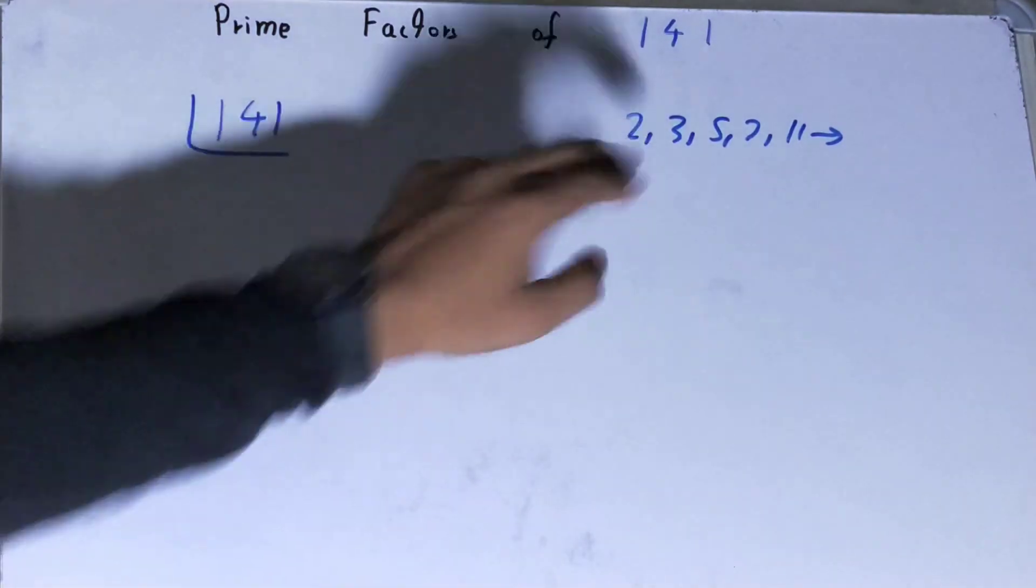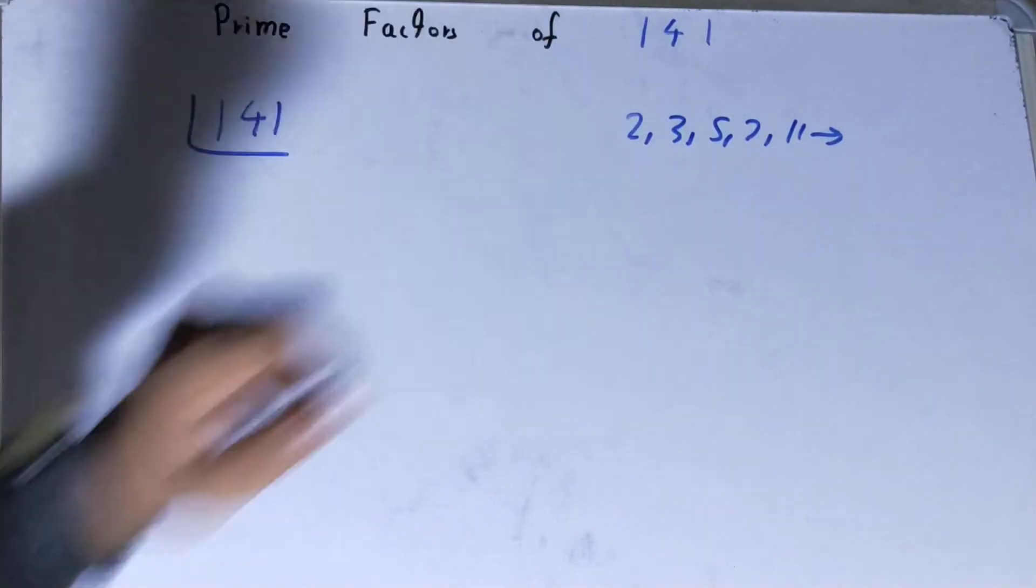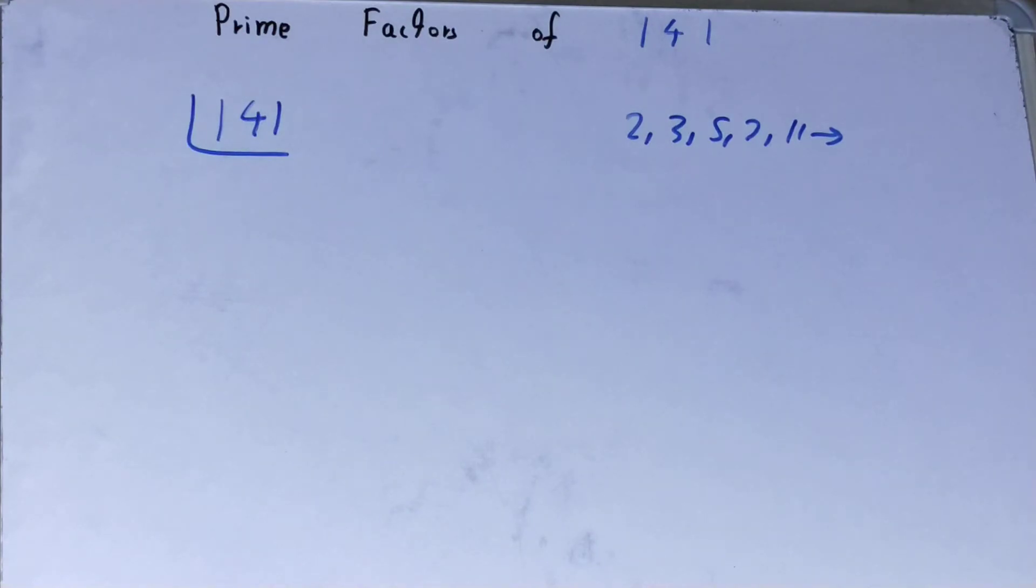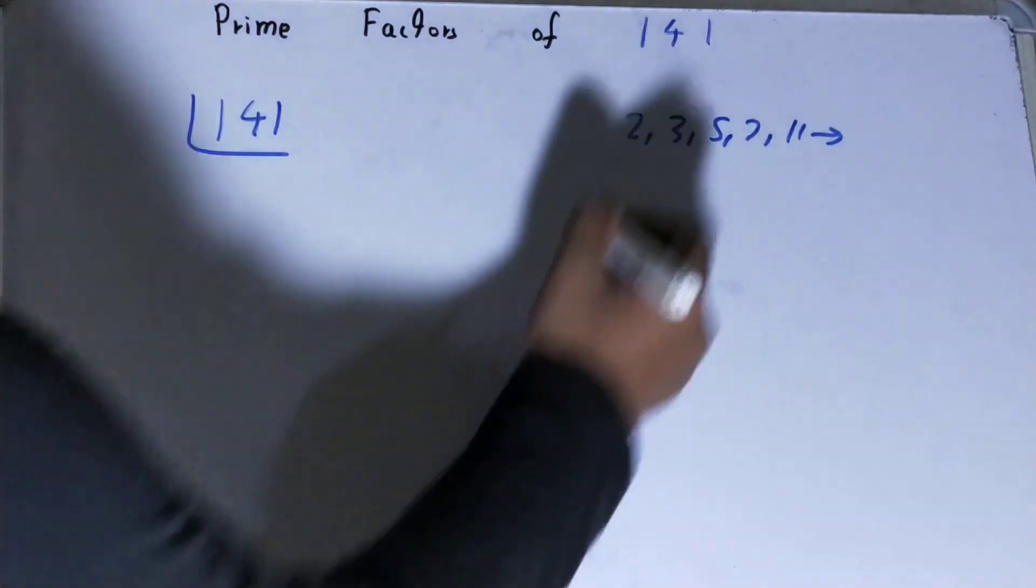Is 141 divisible by 2? If you see the number, it is an odd number, so it is not divisible. What we'll do is go to the next lowest prime number that we have, that is 3.